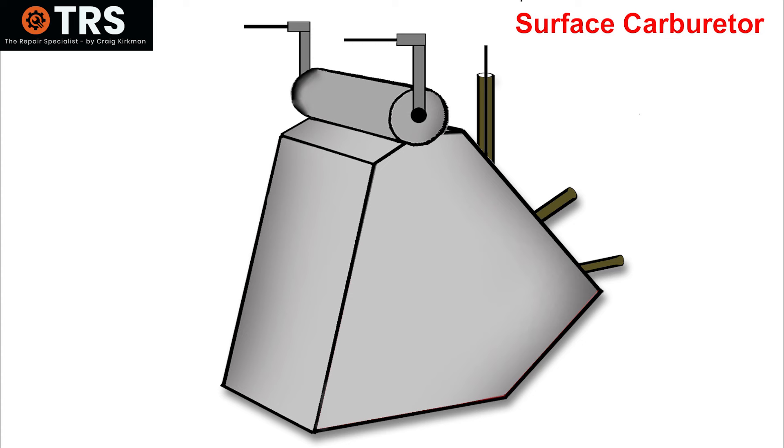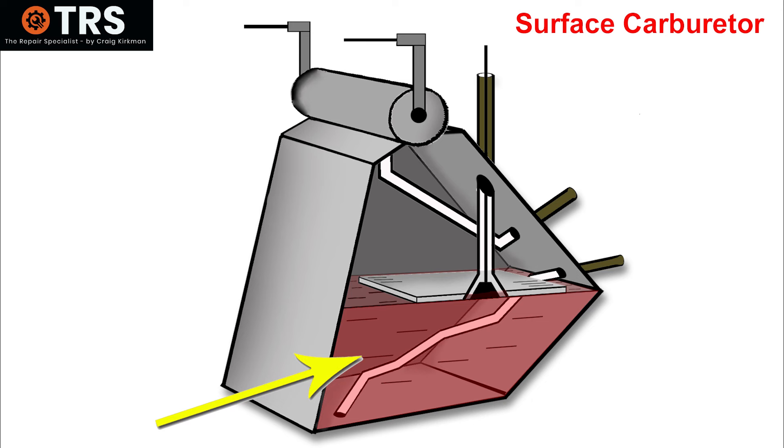First of all, the surface carburetor principle was the carburetor and the fuel tank all in one. So the fuel sat at the bottom of the carburetor here, and was most probably refilled by a small hole somewhere at the top. And just on the fuel surface was this surface plate.